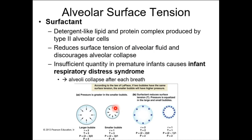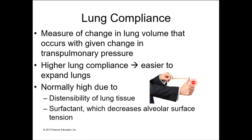Surfactant — we already talked about this — is going to maintain patency or openness of alveoli. Insufficient quantity in premature infants causes infant respiratory distress syndrome. Lung compliance is literally the amount that your lungs can move: can they expand, can they compress, is the thoracic cage movable, is the respiratory diaphragm contractable? It's usually pretty high, and surfactant helps with lung compliance as well.